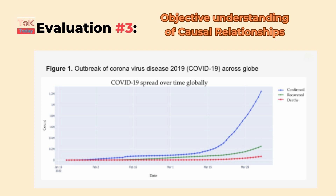This objectivity is crucial for developing evidence-based policies and practices, because it provides a clear, quantifiable basis for understanding how different factors interact and influence each other.